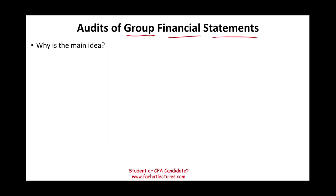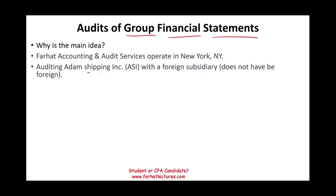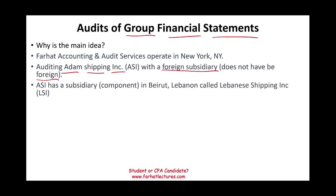What is the big idea of a group financial statement? Let's assume I own an audit firm in New York City, United States. I audited a company called Adam Shipping Inc. — it's a U.S. company, but this U.S. company will have a foreign subsidiary. The subsidiary does not have to be foreign; I'm creating this example to make it more realistic. ASI, which is Adam Shipping Services, they own a subsidiary — which we're going to be calling a component — in Beirut, Lebanon, which is in the Middle East, called Lebanese Shipping Inc., LSI.